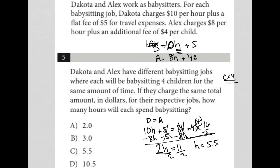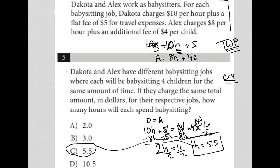Hours equals 5.5 hours, and therefore the answer is choice C. This was a translate word problem question — even the information up above was translated into two equations, which became very useful. The hint was that they charge the same, meaning equal. If they charge the same, how much they charge is equal to each other, which is where that equation came from.